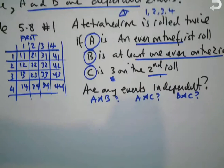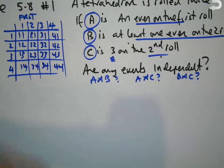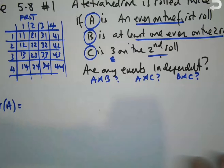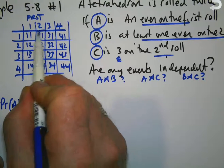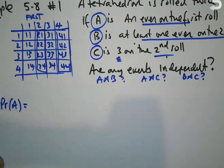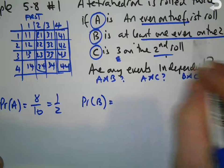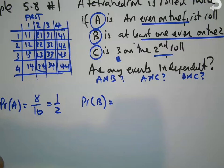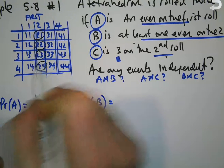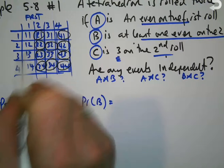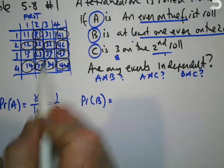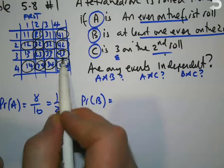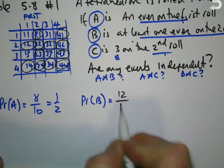Now I can use this lattice diagram to work out the probabilities. Probability of A — even on the first roll — the evens on the first roll cover eight outcomes, so that's 8 out of 16, which equals one half. Probability of B — at least one even on the two rolls — that covers 12 outcomes, so 12 out of 16, which equals three quarters.